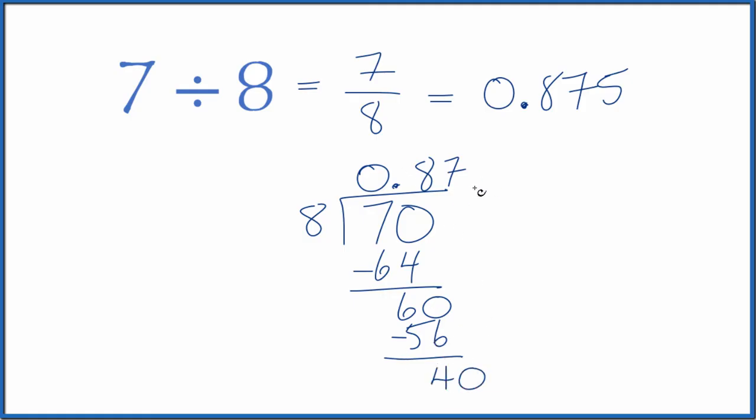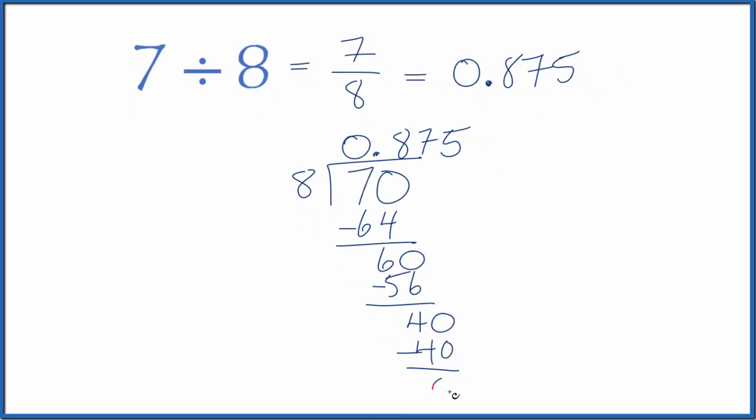Call it 40, move over one. And 5 times 8, that's 40. Subtract, no remainder. And we get 0.875.